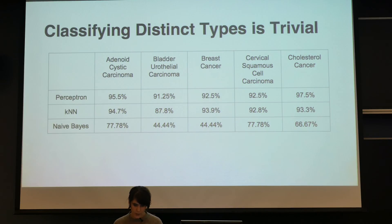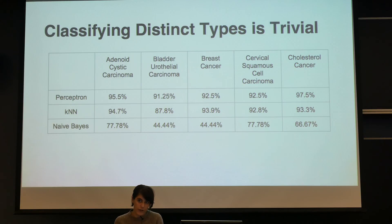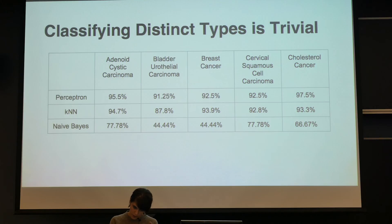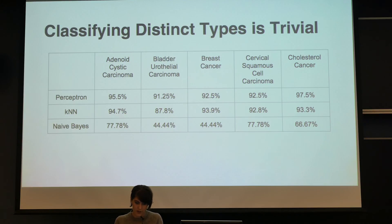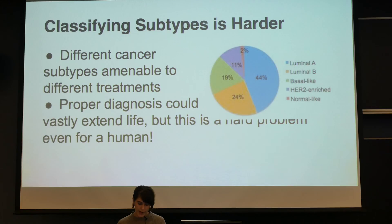To get baselines, we looked at the Synapse online database of microarray samples for gene expression and went through the first 31 different types of cancer, doing classifications across different organs. We found it was trivial to distinguish between them. Using just a perceptron, one nearest neighbor, and naive Bayes, our mean performance was above 95% accuracy without any feature selection or specialized techniques. This wasn't an interesting problem — a pathologist doesn't have a hard time telling breast cancer from lung cancer.